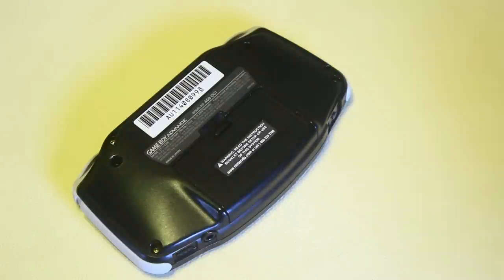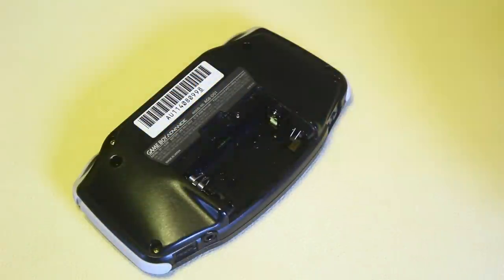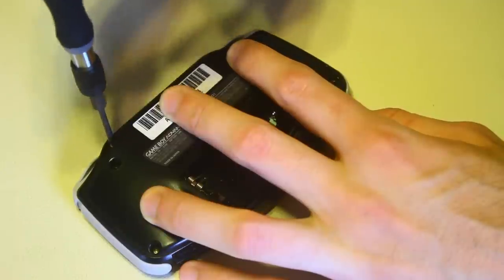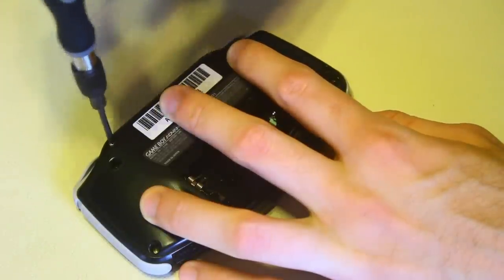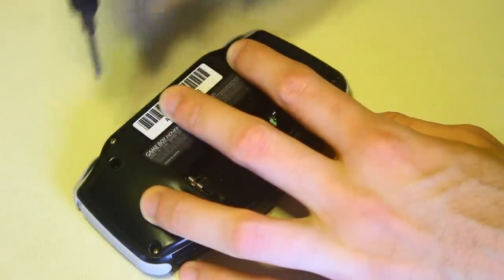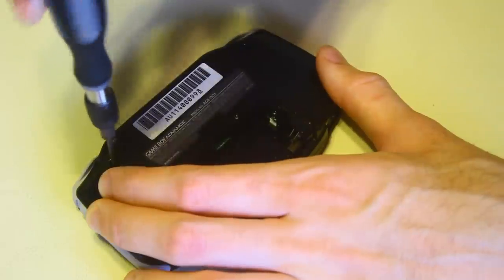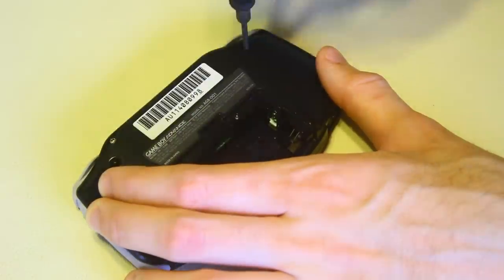First start by removing the battery cover. There are six tri-wing screws you'll have to remove and one Phillips screw to remove underneath the battery cover.